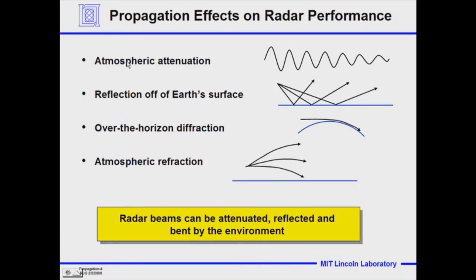First of all is attenuation through the atmosphere. The microwave electromagnetic radiation will interact with the atmosphere. Some of the energy will scatter and will be lost in the scattering process, and so the beam will be weaker in power when it hits the target and when it comes back. The beam is going to be a little weaker over time as it passes through the atmosphere.